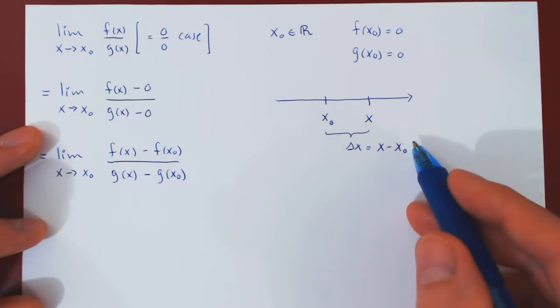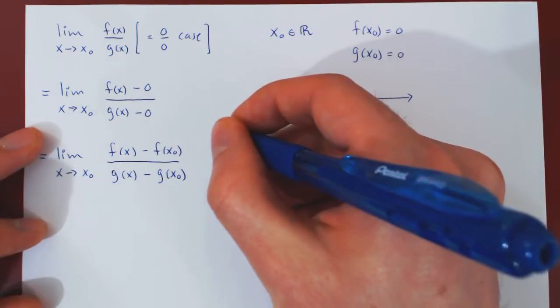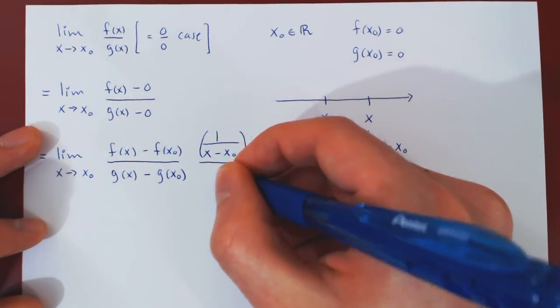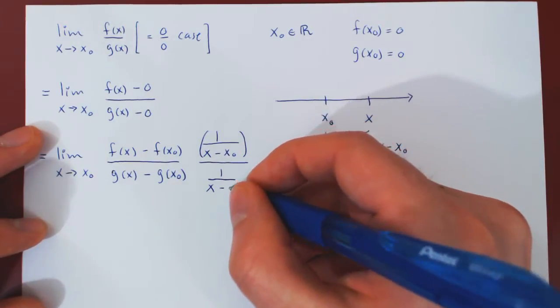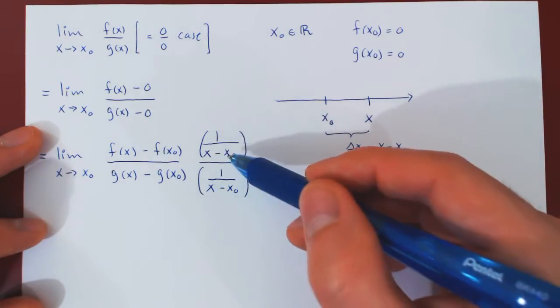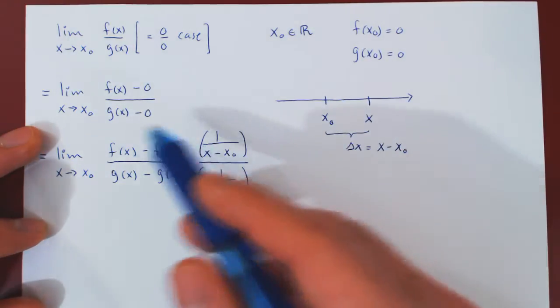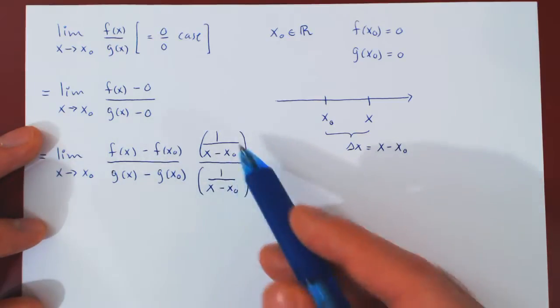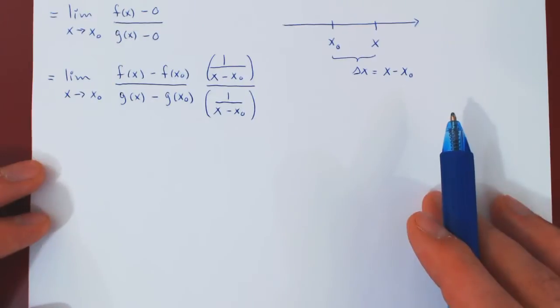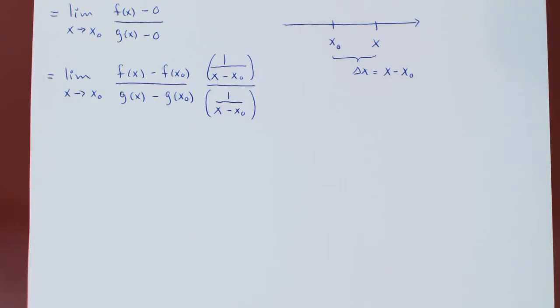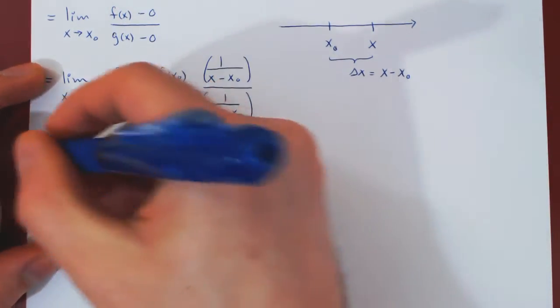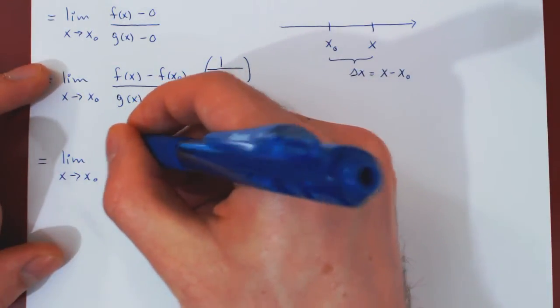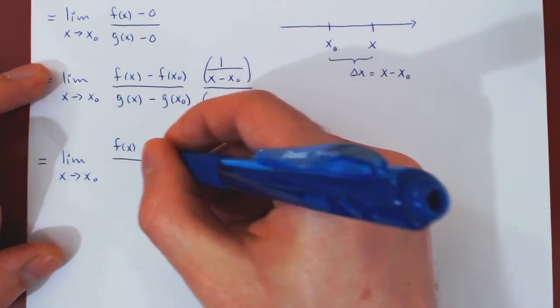What we can do now is multiply top and bottom of our fraction by the same thing. We'll multiply by 1 over Δx to have Δy over Δx, top and bottom. As (1/(x - x₀))/(1/(x - x₀)) is simply 1, we're not changing the expression. Let's multiply through both expressions by 1/(x - x₀), or equivalently divide top and bottom by x - x₀, which is our Δx.